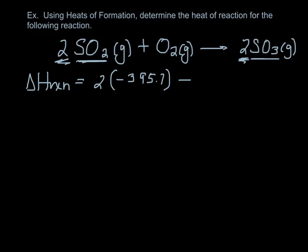And then I subtract whatever the heat of formation of SO2 is, but I need to multiply by 2. So minus 2 times, if I look at the table, it's minus 296.8. I add all the products and subtract all the reactions, so I say minus 0. Oxygen is an element, so it doesn't matter. So I do out this math, and I get minus 197.8 kilojoules.